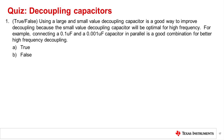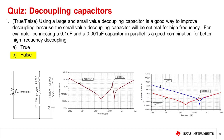Question 1. True or False? Using a large and small value decoupling capacitor in parallel is a good way to improve decoupling because the small value capacitor will be optimal for high frequency — for example, connecting a 0.1 microfarad and a 0.001 microfarad capacitor in parallel. The correct answer is False. Most modern ceramic capacitors with similar package size will have similar ESL. The combination of two different capacitors in parallel can have a combined impedance with a resonant peak, which can increase noise at that frequency.